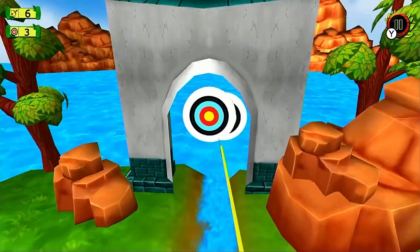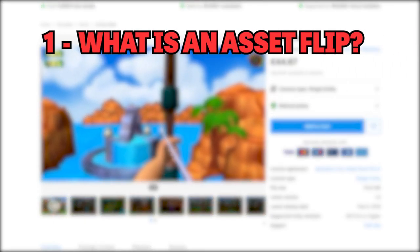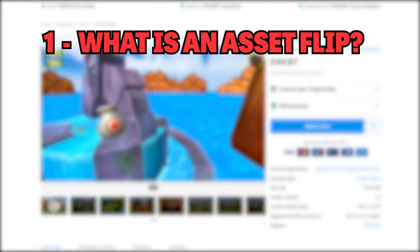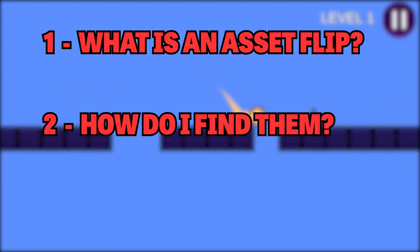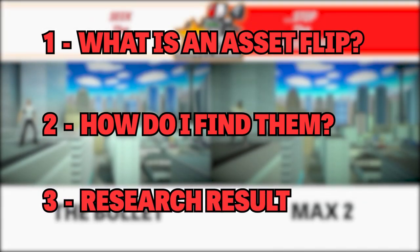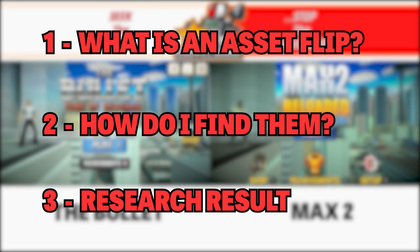I'm going to be breaking this video down into three parts. The first part will cover what an asset flip is, or at least what myself and many others deem one to be. In the second part I'll be talking about where I found the games and how I identified the assets used to create them, and in the final part I'll be showing you the results of my findings. I'll also have each of these sections timestamped down below in case you want to skip to one.